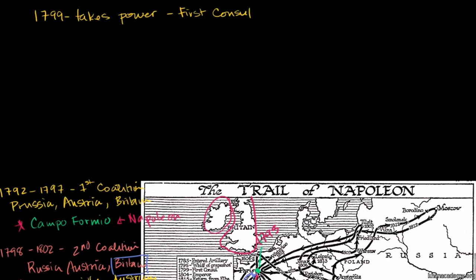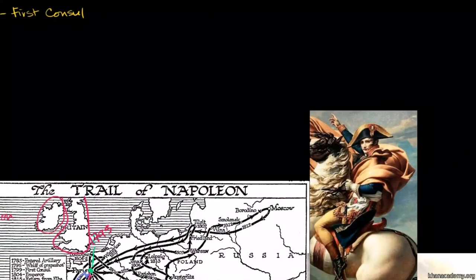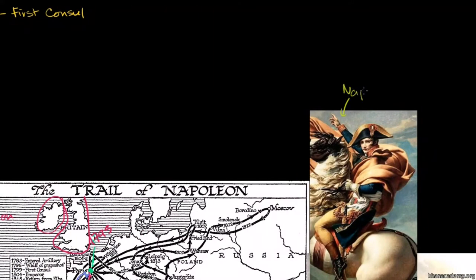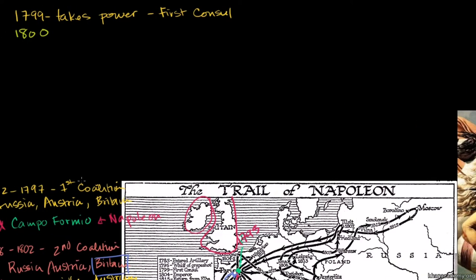Then in 1802 — actually before that, in 1800 — remember when he took power, we were still in the War of the Second Coalition. France had lost ground; they had lost a lot of what they had gained in the First Coalition. In Italy, the Austrians had taken it back. So Napoleon decides to take charge and cross the Alps. This is a painting of Napoleon crossing the Alps, leading his troops to take back what he felt needed to be reclaimed from Austria. In 1800, he leaves to take back Italy.